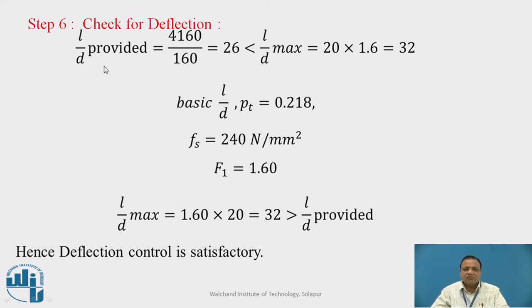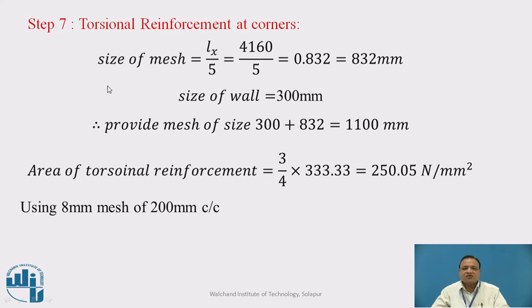Step 6: Check for deflection. L by d provided is 26, which should be less than L by d max. For L by d max, refer figure 4 of IS 456-2000. We find f1: 20 times f1. F1 from figure 4 works out to be 1.6 for percentage steel 0.218 and fs 240 N/mm^2. 20 times 1.6 is 32, which is greater than 26. Therefore L by d max is 32, which is greater than L by d provided. Hence deflection control is satisfactory.